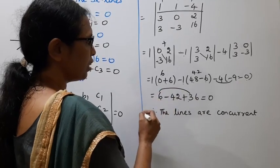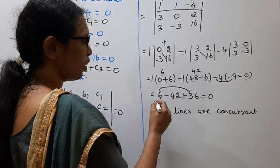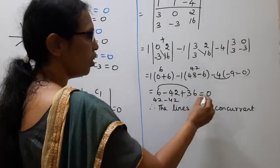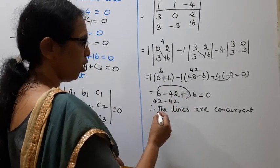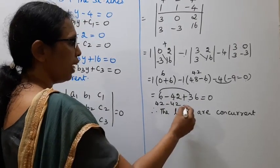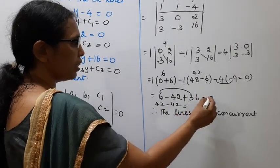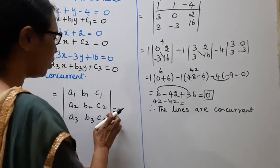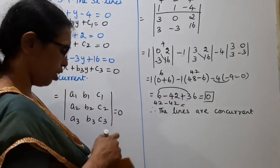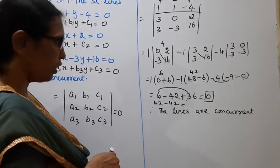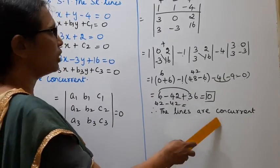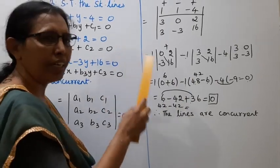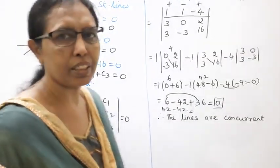The result is zero. Since this determinant equals zero, the lines are concurrent. That is the answer.